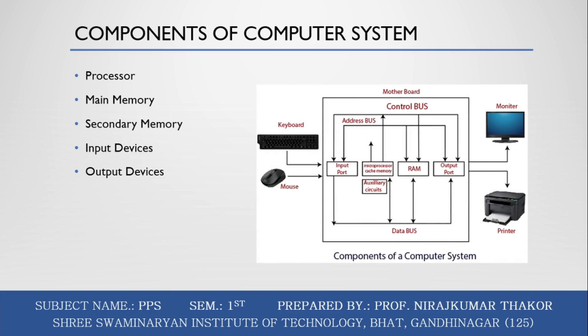Input devices include keyboard and mouse, and output devices include monitors and printers. Hardware and software exist on the computer. Information stored through devices is known as computer software. Hardware components relate to electronic and mechanical parts, while software components relate to data and computer programs. Many elements are connected to the main circuit board called the motherboard.